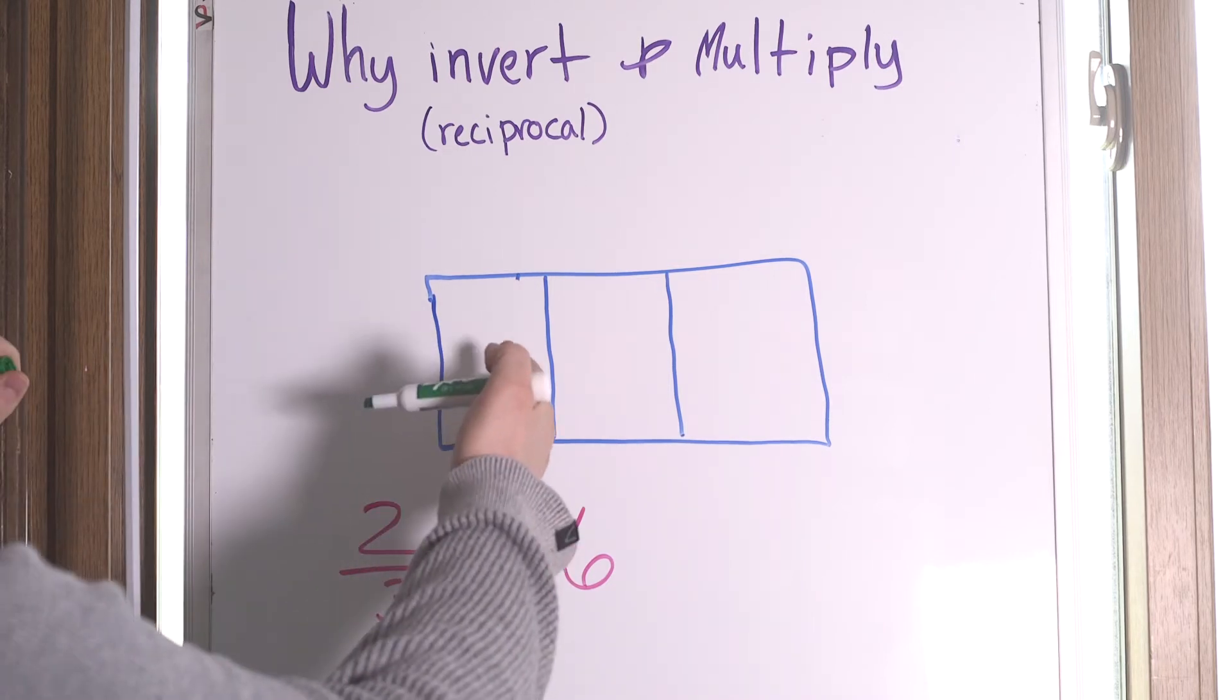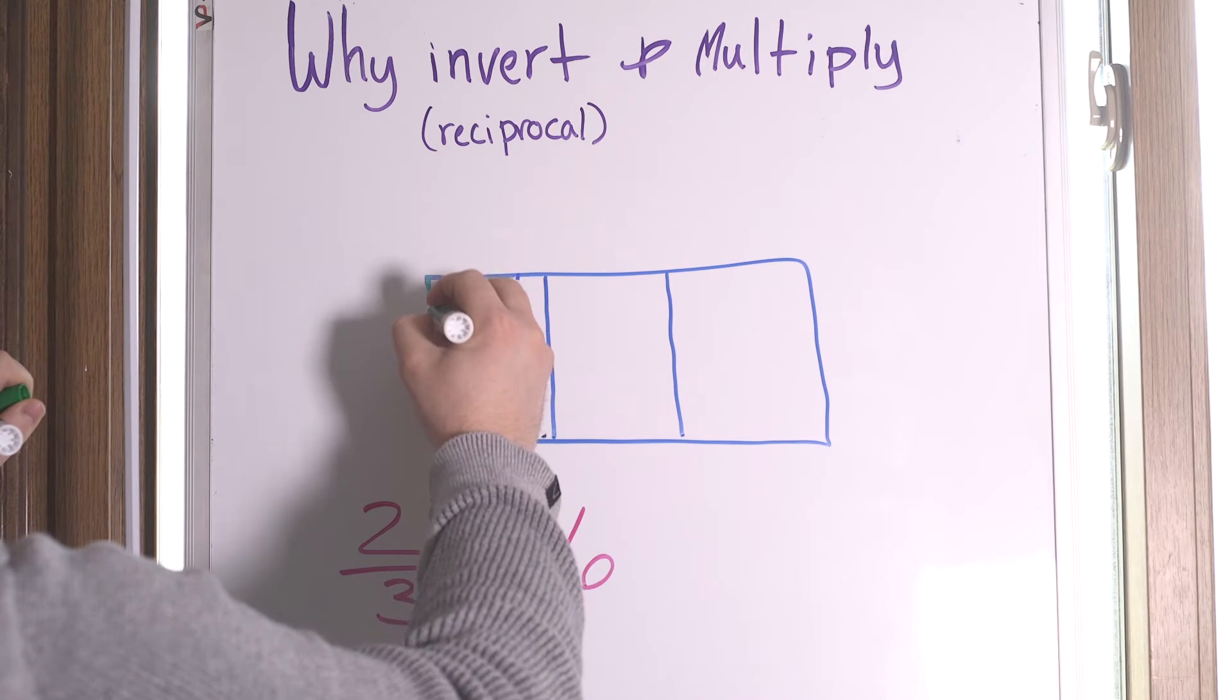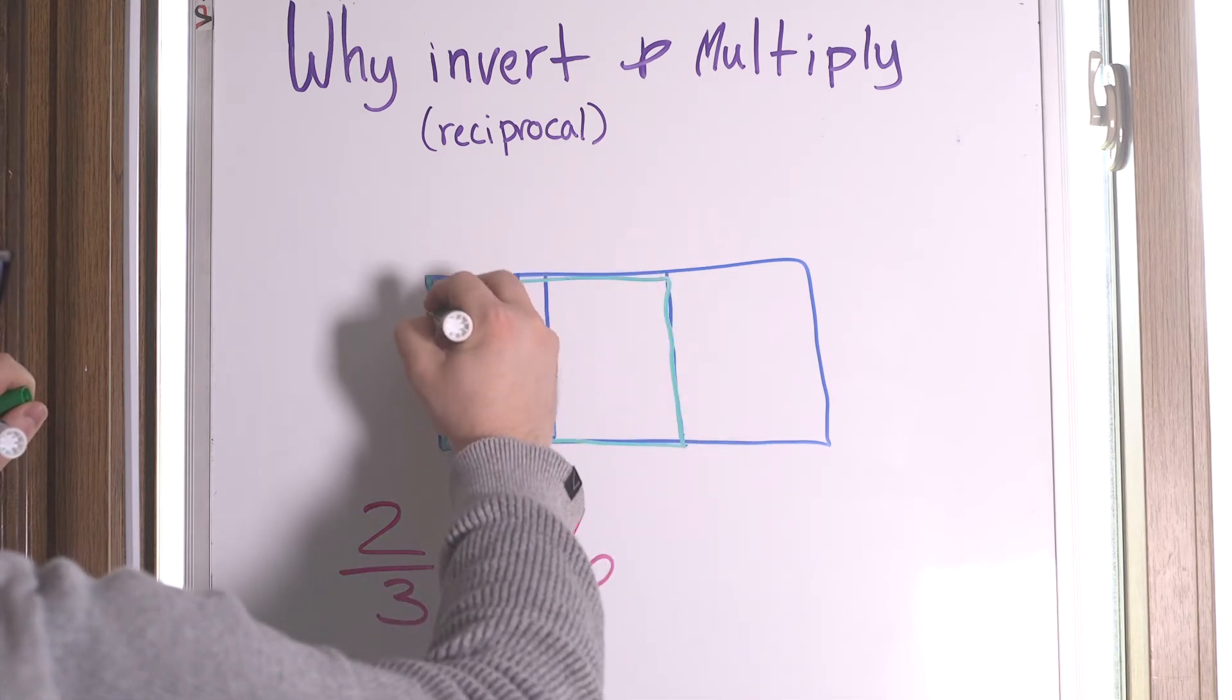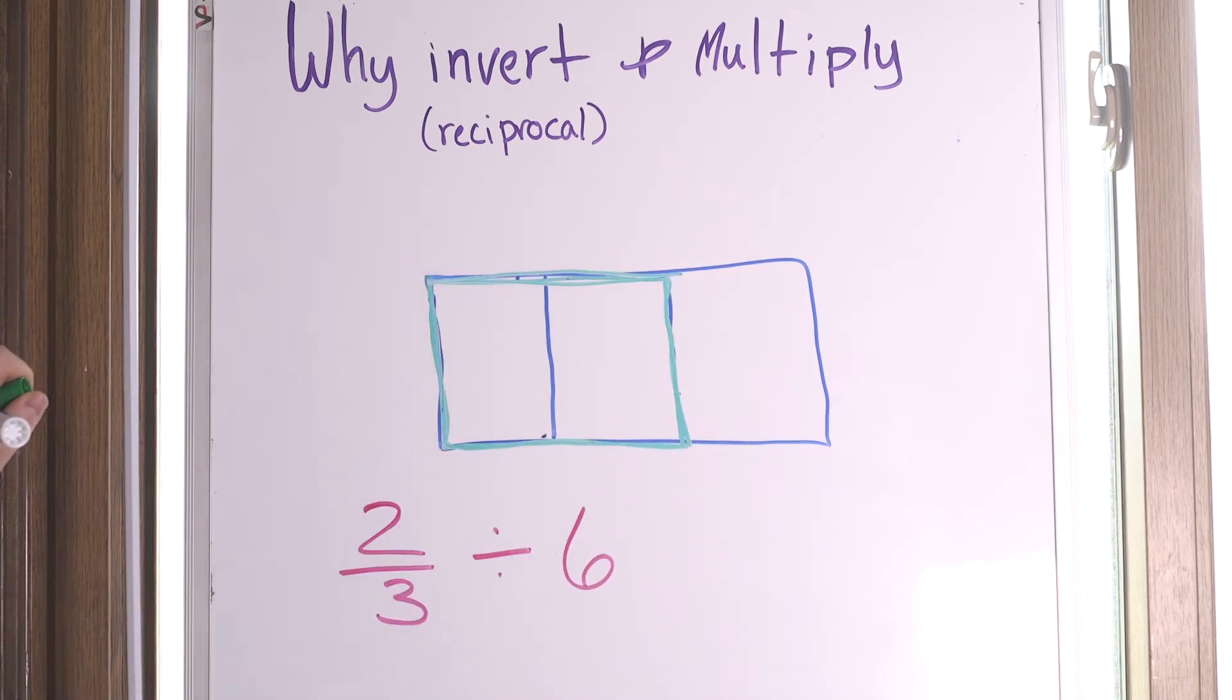Two thirds divided by six. Well, here's my candy bar. And it's saying two thirds of the candy bar split into six, divided by six. So here's my two thirds. I'm just going to highlight this part in green. Okay, so this is my two thirds of my candy bar.